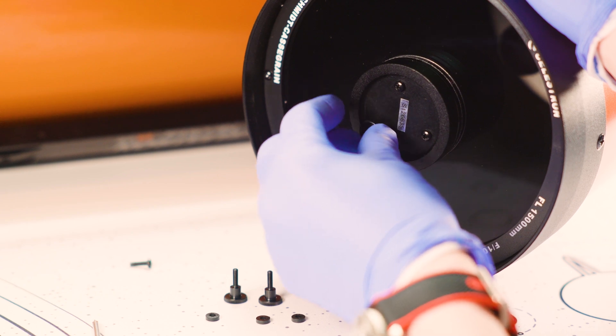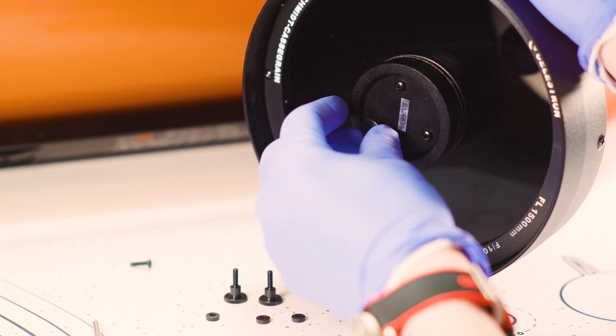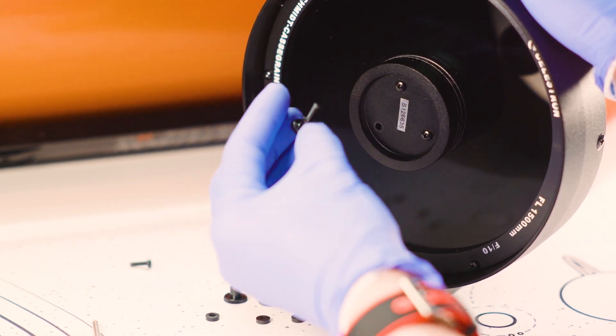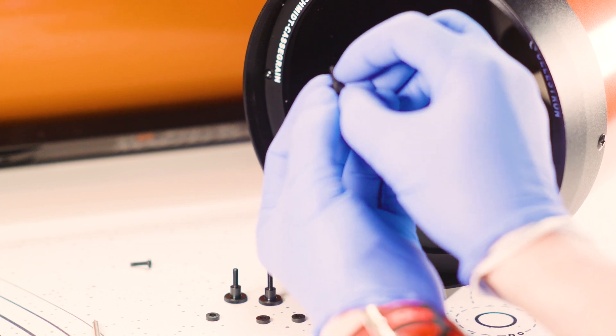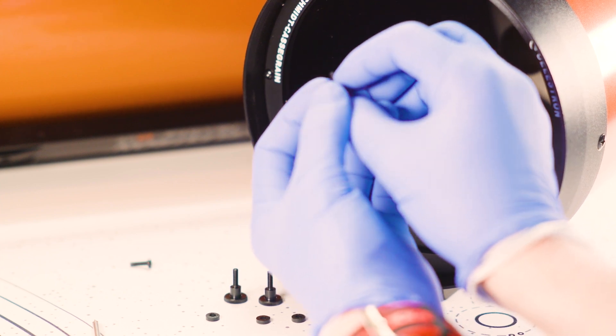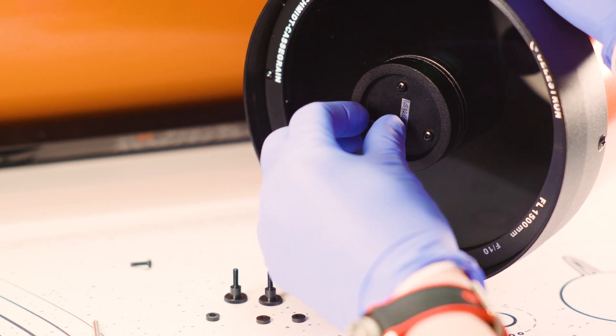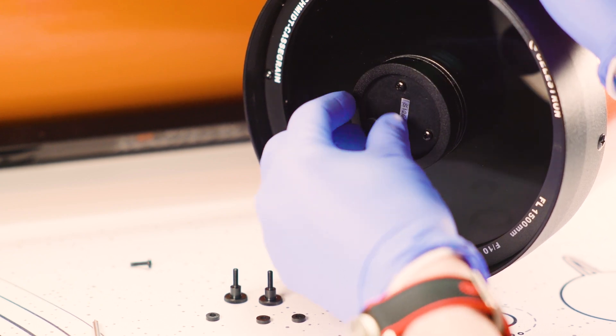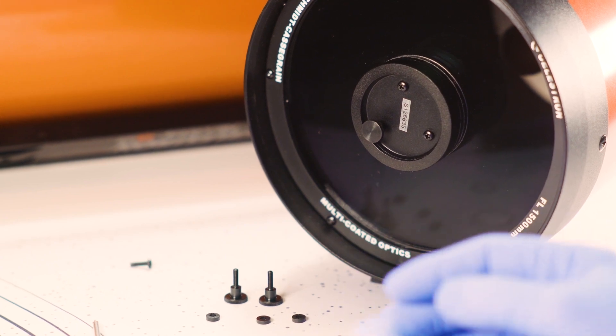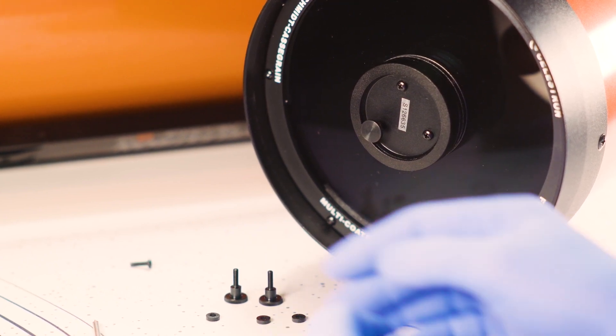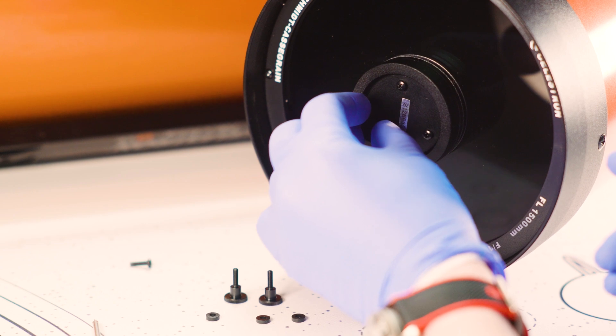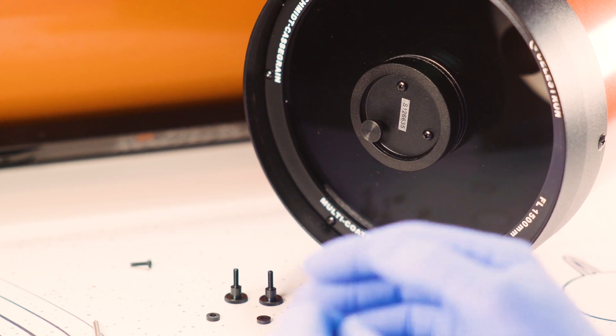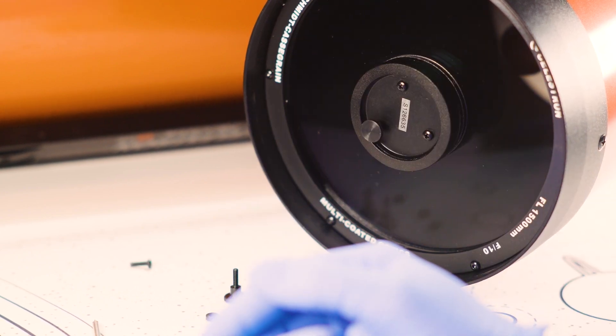Now we shouldn't encounter any resistance. If you do, stop what you're doing, take this out, and inspect the threads to see if there's any damage or grit in there. Because the last thing you want to do is force this and damage the threads on your secondary. So I'm not going to tighten that down all that much, just enough so that I know that it's got it grabbed. Okay, now we can go ahead and move on to the remaining screws.